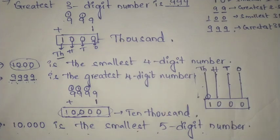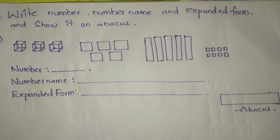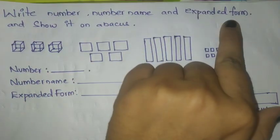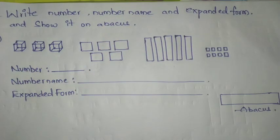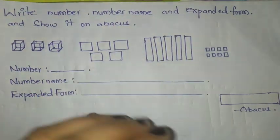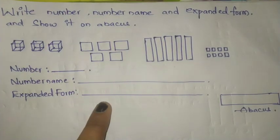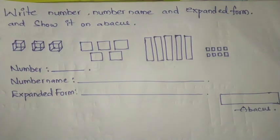Now let us learn how to write the number name and expanded form for four digit numbers. Look here children. Here I have one question for you: write the number, number name, and expanded form, and show it on the Abacus. Some pictures are given and using those pictures we have to write the number, number name, expanded form, and show the number on the Abacus.